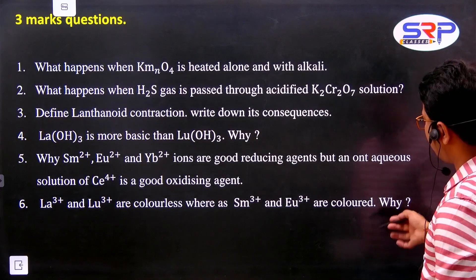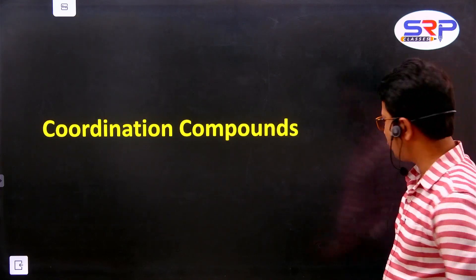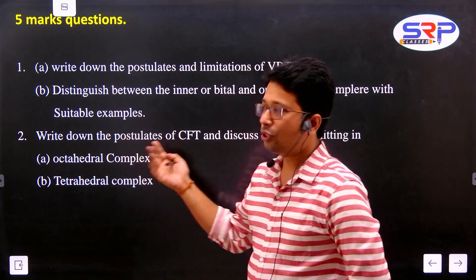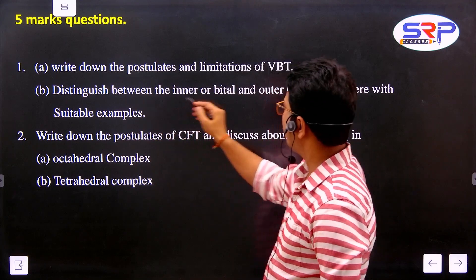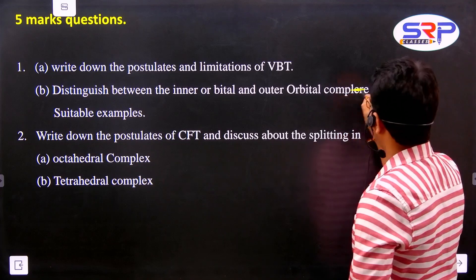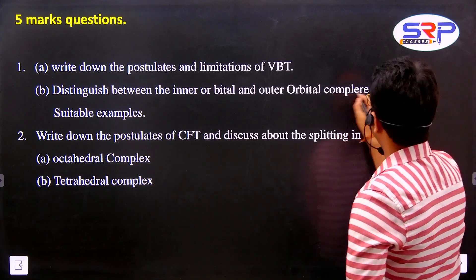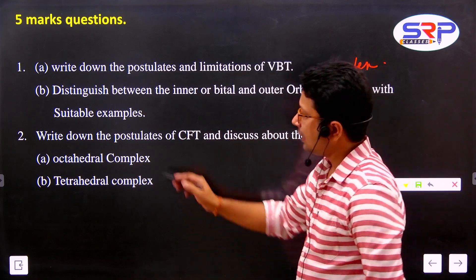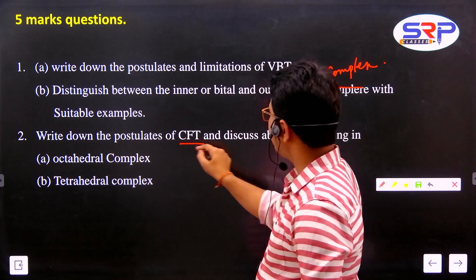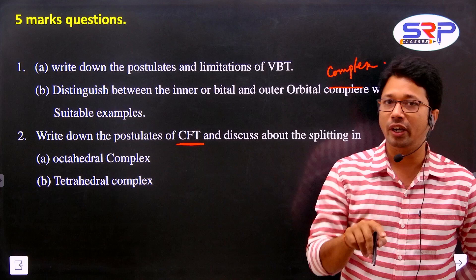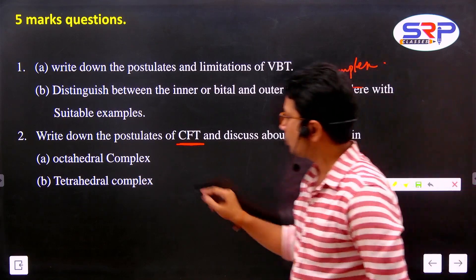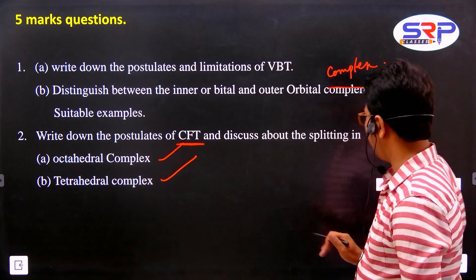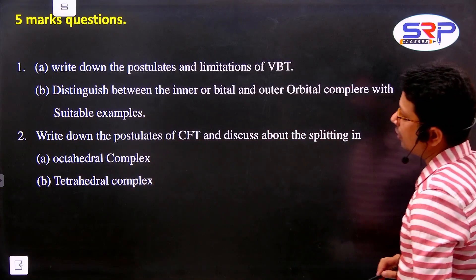Next: coordination compounds. Long questions include: write the postulates and limitations of VBT (Valence Bond Theory), distinguish between inner orbital and outer orbital complexes with suitable examples. Also: write down the postulates of CFT (Crystal Field Theory) and discuss the splitting in octahedral and tetrahedral fields. Last year octahedral was repeated - tetrahedral may come this time - prepare both for safety.